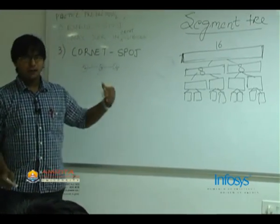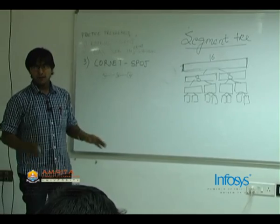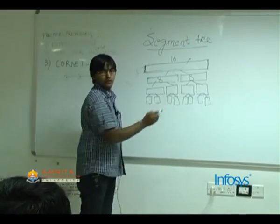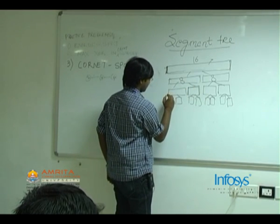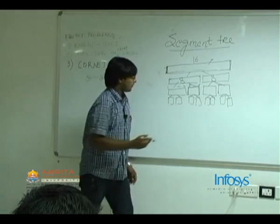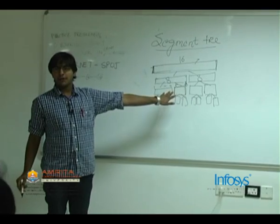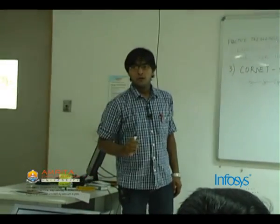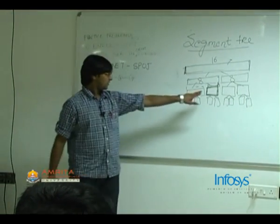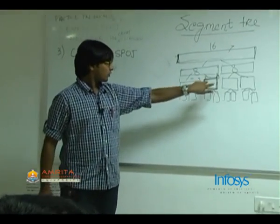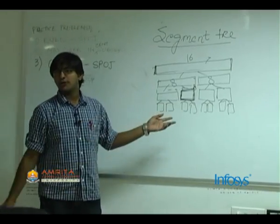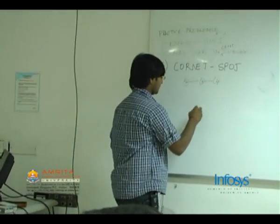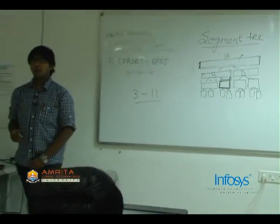Let's assume this structure has been created. For each node we know the minimum, and this minimum signifies the minimum for a particular range. For example, one node covers range 1 to 4, another covers 5 to 8. If there is a query for the minimum in range 5 to 8, we can directly answer from that node. Once this data structure is created, you can answer queries for those intervals that are part of this interval tree. For a general case, suppose the query is from 3 to 11.